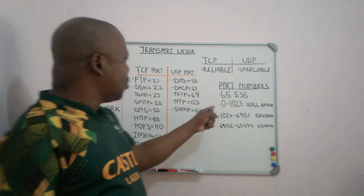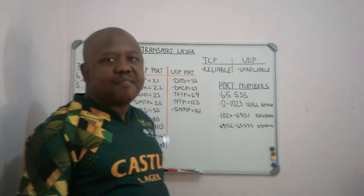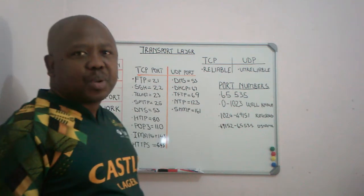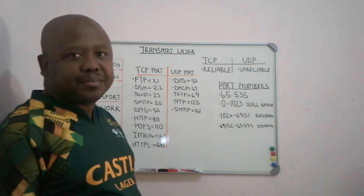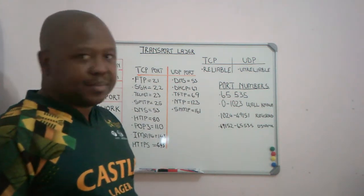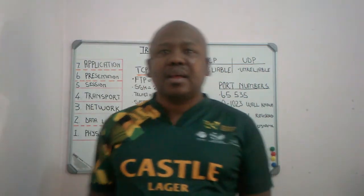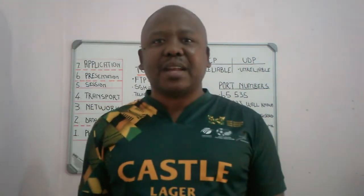From 0 to 1023, we have well-known port numbers, or system port numbers. They are used for services which are fundamental to the internet. They cannot be assigned to hosts or clients.